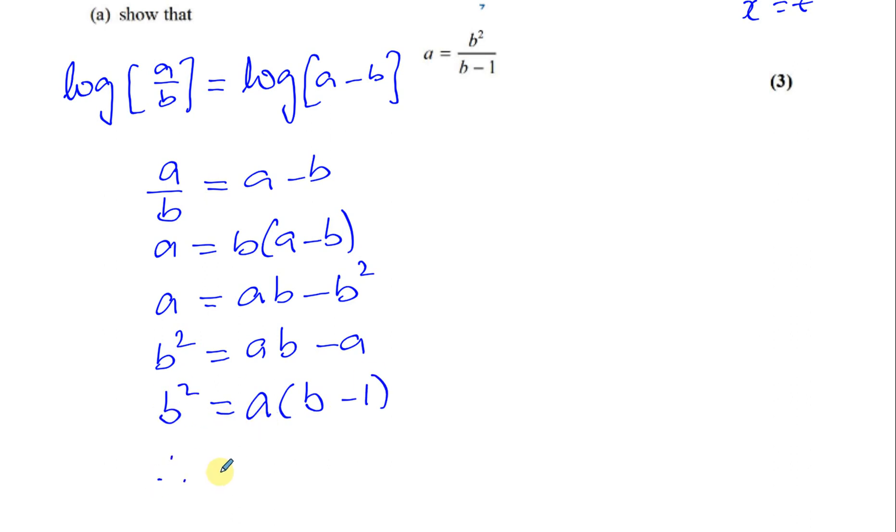And we can then divide by B minus 1. So, A is going to be B squared divided by B minus 1. Okay, now, the second part of the question,